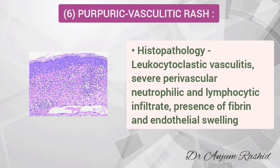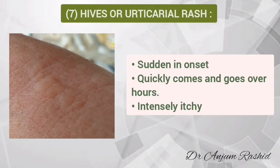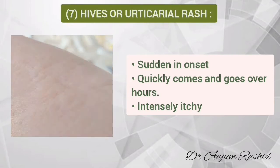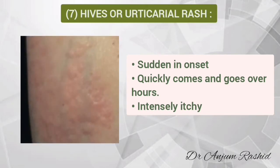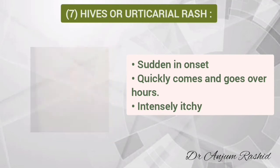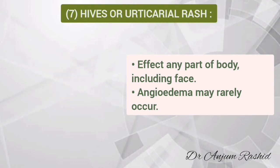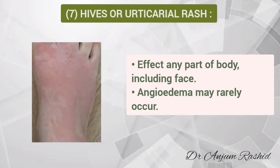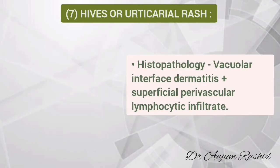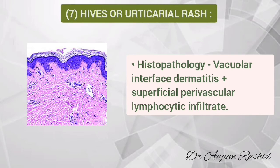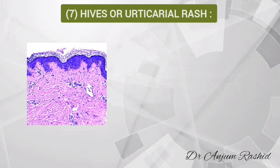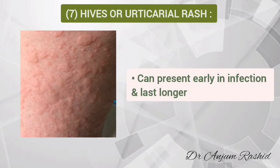Another important rash in COVID patients is hives or urticarial rash. This rash is sudden in onset, quickly coming and going over hours, and is intensely itchy. Urticarial rash can affect any part of the body including the face. Angioedema may rarely occur. Histopathology shows vacuolar interface dermatitis and superficial perivascular lymphocytic infiltrate. This rash can present early in infection and can last longer even when the person is no longer contagious.